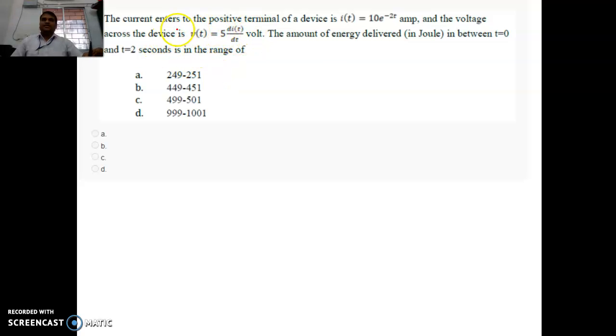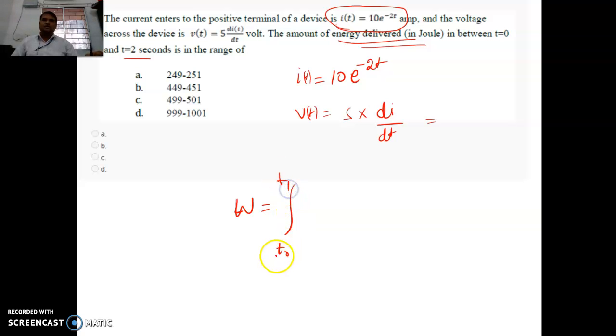Question number 4. Here, the value of the current is given to you. The current equals 10 e to the power minus 2T. And the voltage is also given. You need to find it out. The amount of energy delivered in joules between 0 and 2 seconds. So energy is asked. Energy, you can write as W, total from T0 to T1, or from 0 to 2. And power, you need to find Pt and dt. So what is Pt here? Pt is nothing but multiplication of Vt into I of t.